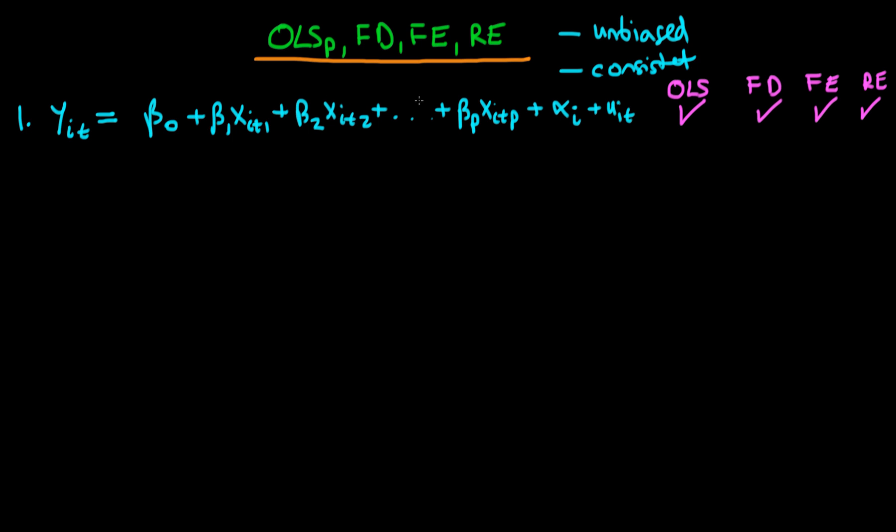And notice that what we could have done is we could have included some factors which were solely time-dependent but we could have just controlled for those by including time dummy variables. So we don't explicitly need to actually write it down here, we're sort of implicitly assuming we've already dealt with any unobserved time-dependent factors.